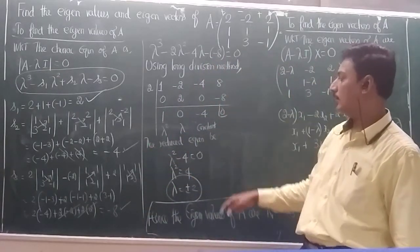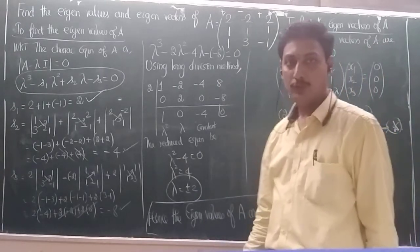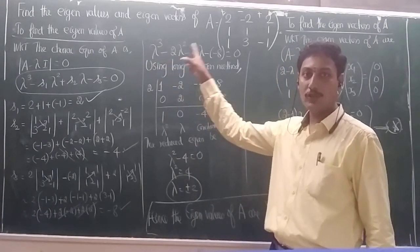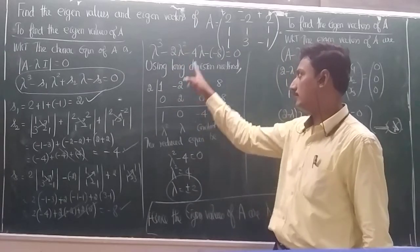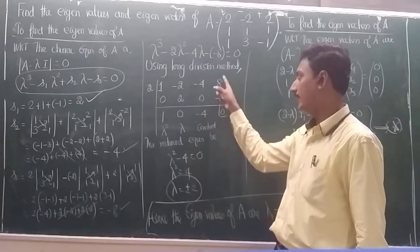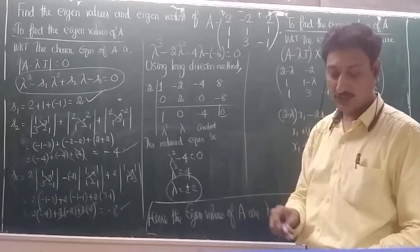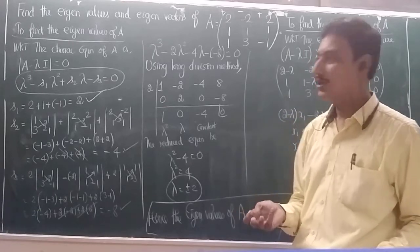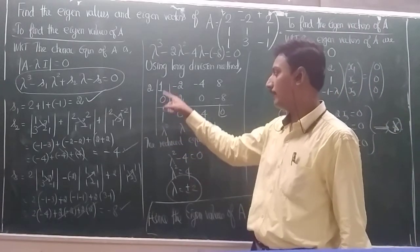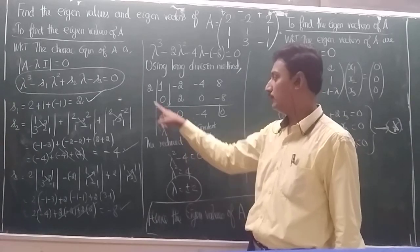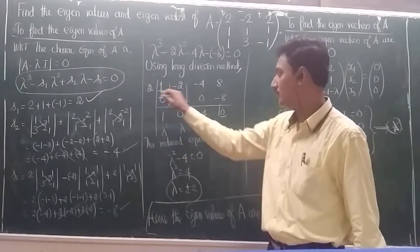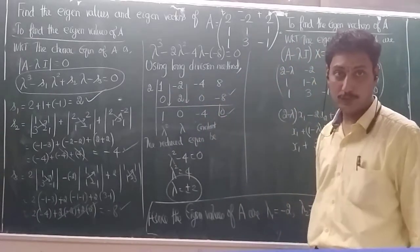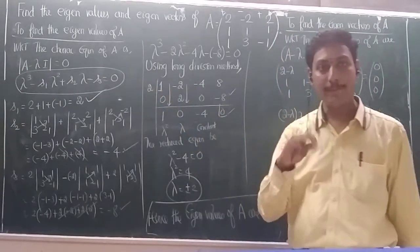Using the long division (trial and error) method to find the eigenvalues, we collect the coefficients: 1, −2, −4, +8. Testing λ = +2: starting from the left, 1; 1×2=2, −2+2=0; 0×2=0, −4+0=−4; −4×2=−8, 8−8=0. The remainder is 0, so λ = 2 is an eigenvalue.